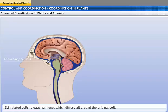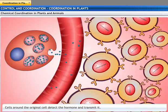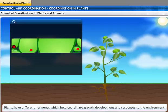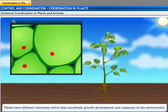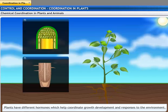Stimulated cells release chemical compounds called hormones, which diffuse all around the cell. If other cells nearby have receptors on their surfaces to detect this compound, they can recognize the information and even transmit it. This is a slower process but can potentially reach all cells regardless of nervous connections. Plants have various hormones which help coordinate growth, development, and response to the environment. They are synthesized at places away from where they act and simply diffuse to the area of action.